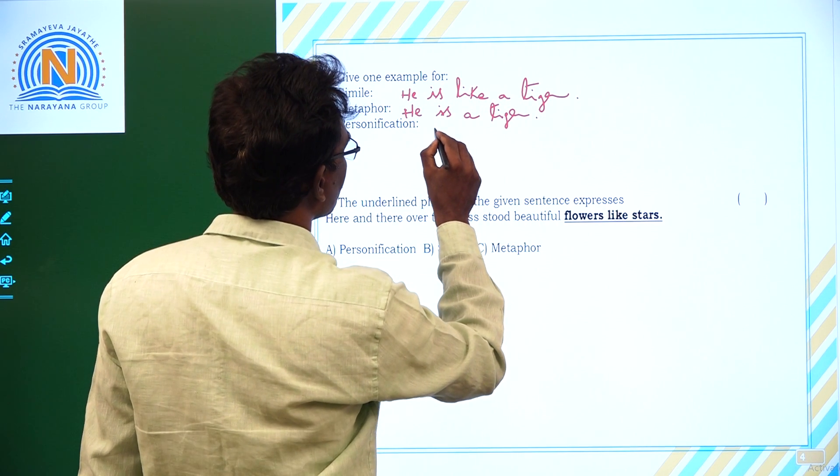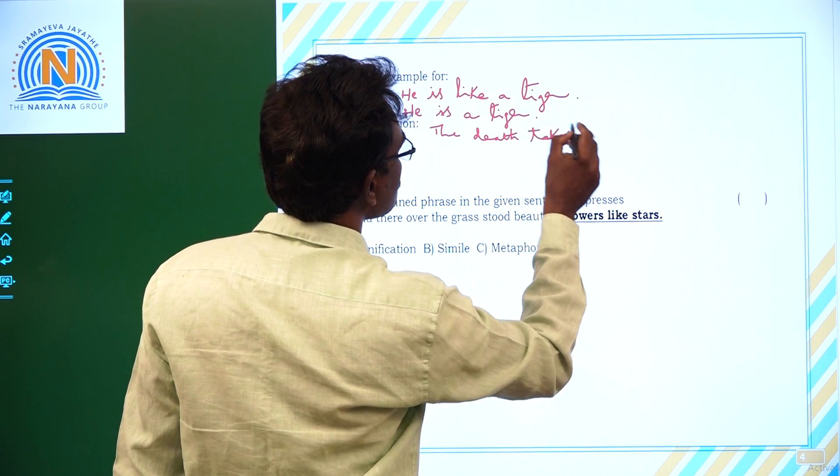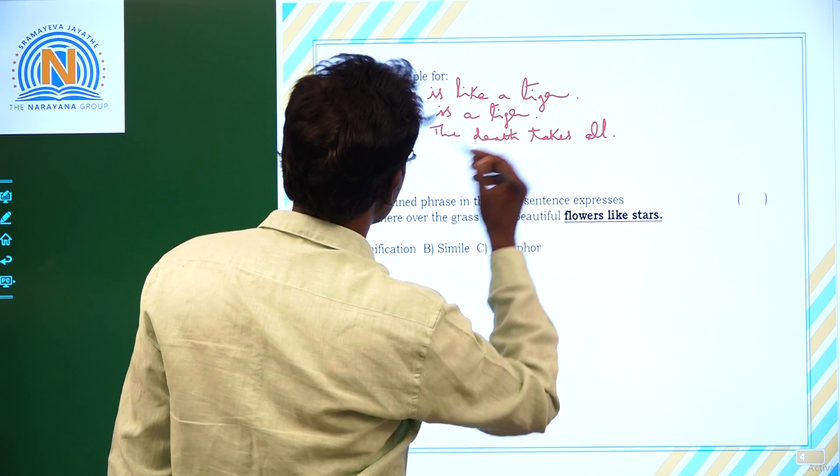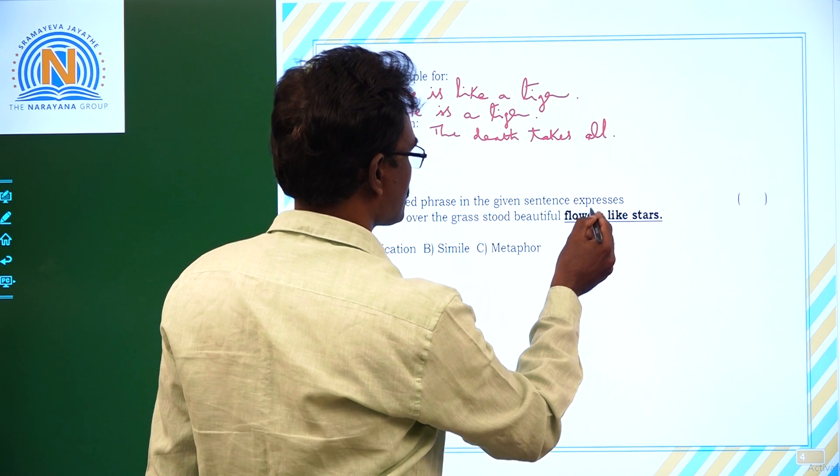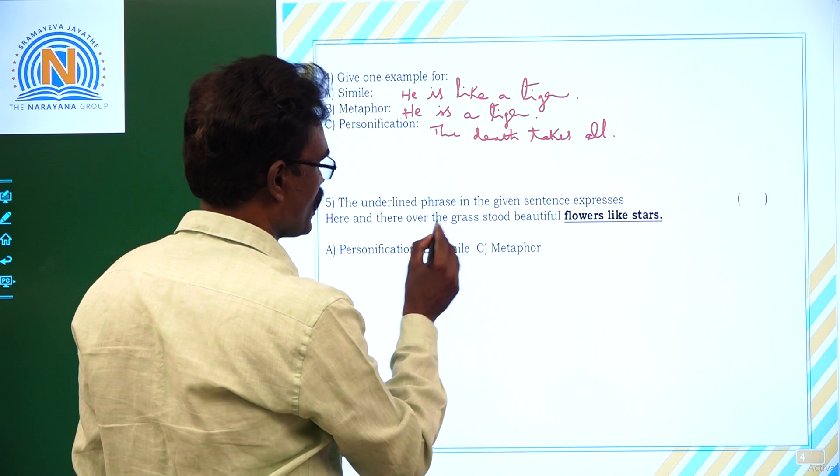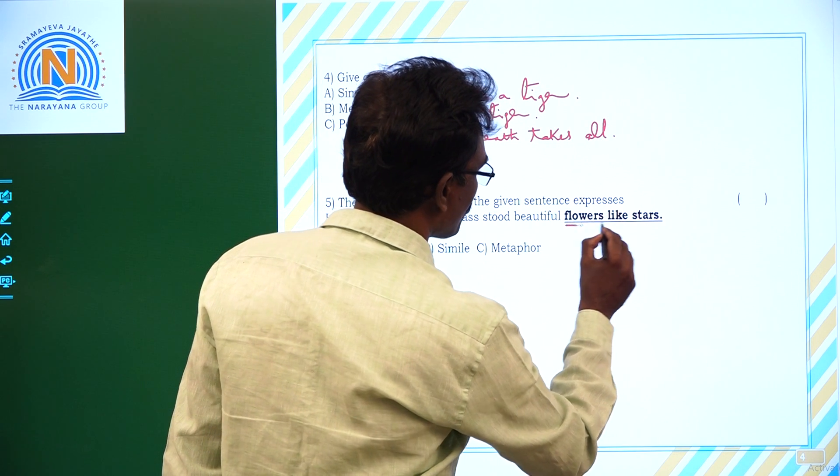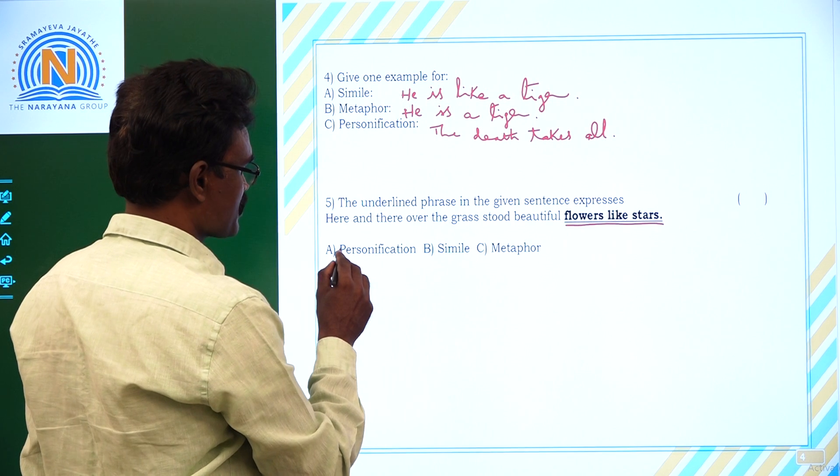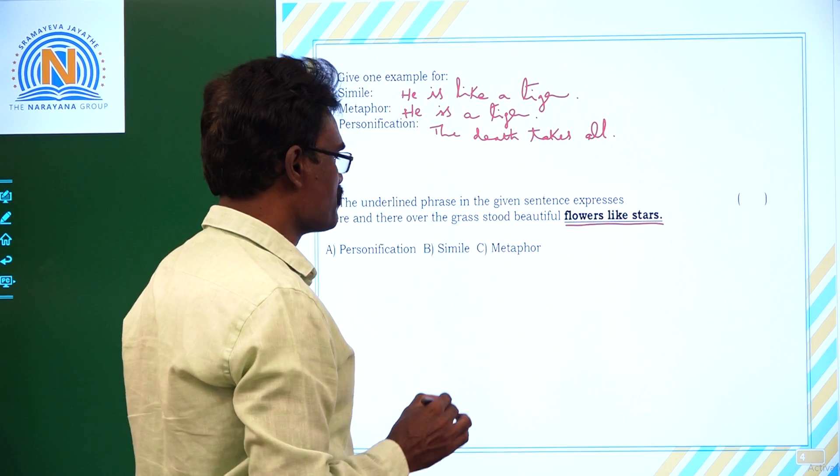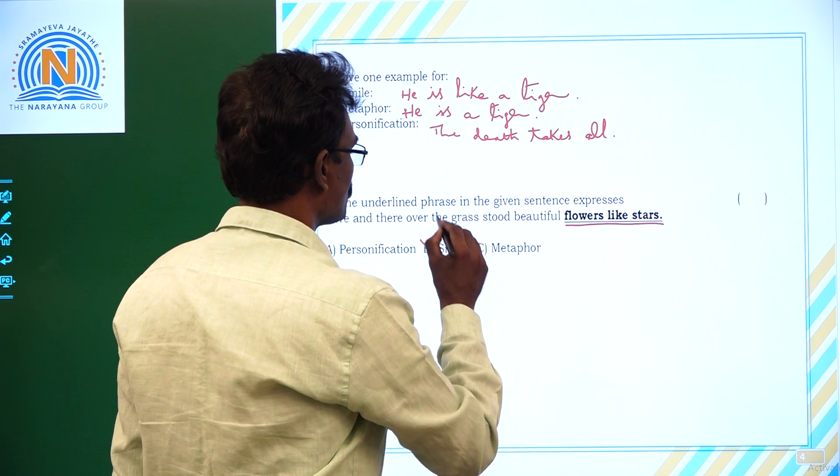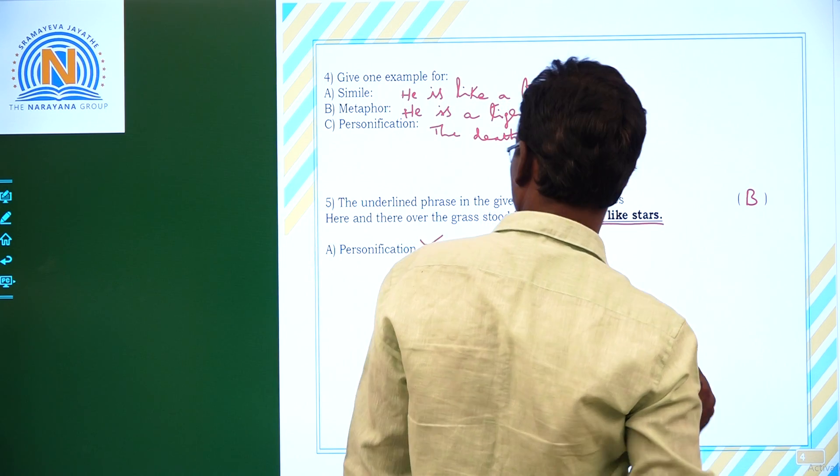Personification: death takes, or death is personified, so personification. The underlined phrase in the given sentence expresses: Here and there over the grass stood beautiful flowers like stars. See here, flowers like stars. So option here: A. Personification, B. Simile, C. Metaphor. So this one, option B, simile. Option B is the correct one.